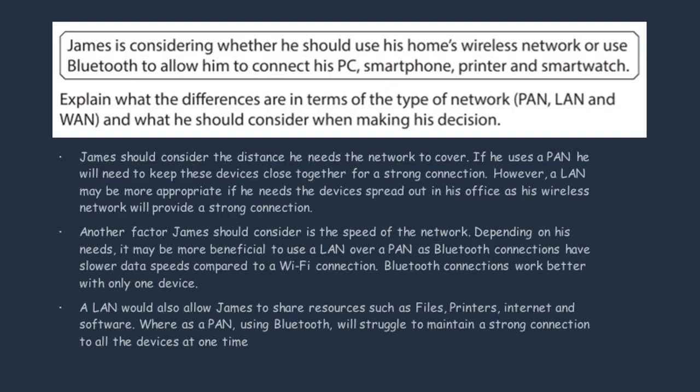The next factor he should think about is the speed of the network. If he needs a fast connection he's better off going with a local area network, especially if he connects using an ethernet cable — the connection speeds can be quite fast. When you compare this to a Bluetooth connection, the LAN connection speed will be a lot faster and more secure.